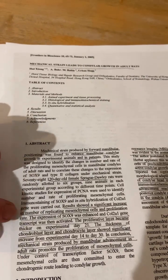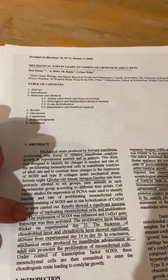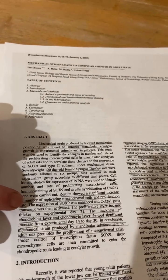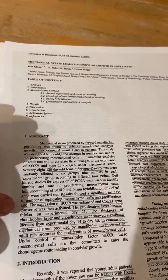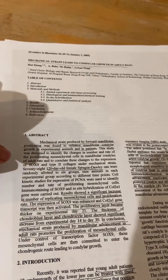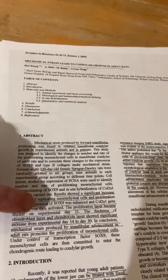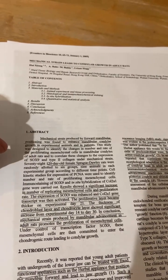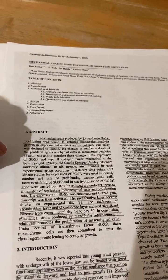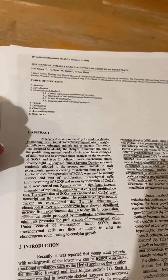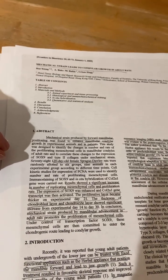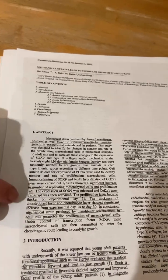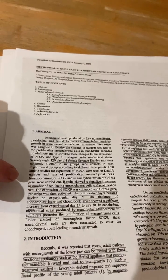Results showed a significant increase in number of replicating mesenchymal cells and proliferation rate. This is very good. The expression of SOX9 was enhanced and COL2A gene transcript was then activated. These are all chondrogenic genes. This is very good. The proliferative layer became thicker on experimental day 21. The thickness of chondroblast layer and chondrocyte layer showed significant increase from experimental day 14 to day 30. In conclusion, mechanical strain produced by mandibular advancement in adult rats promotes the proliferation of mesenchymal cells.